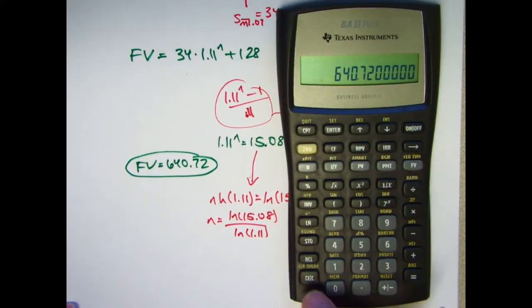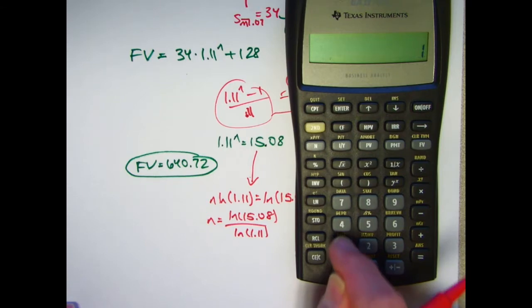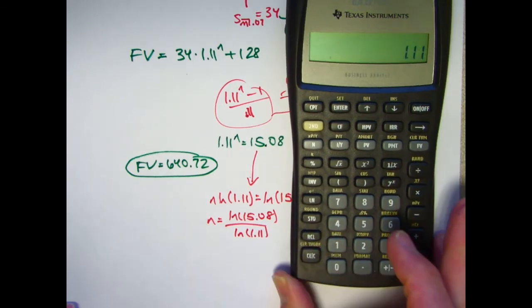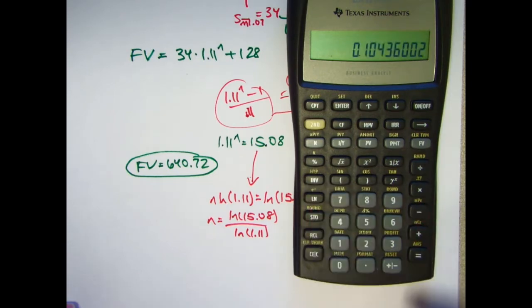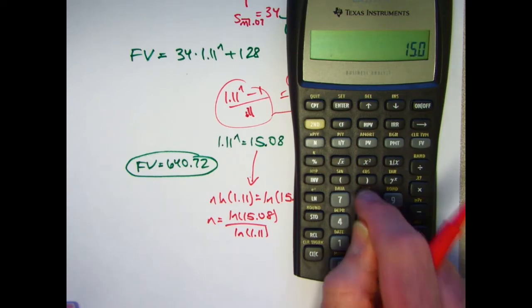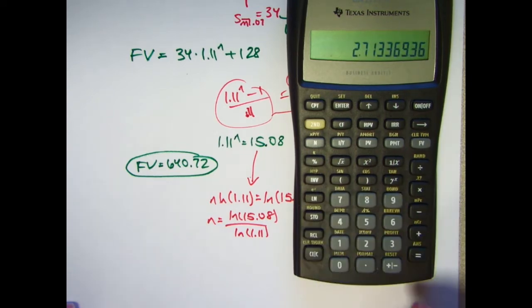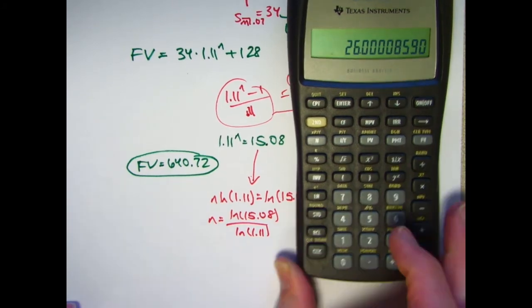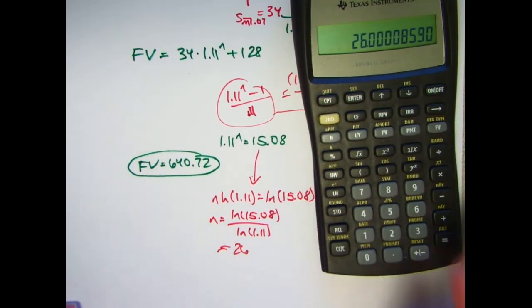N is going to be natural log of 15.08 divided by natural log of 1.11. Let's see if this comes out to be 26 or not. I'll figure out the natural log of 1.11 first. 1.11. Press my natural log button. I'll go ahead and store that in register 1. Natural log of 15.08. This is that. Divide by what's in register 1. Yeah, it's about 26.